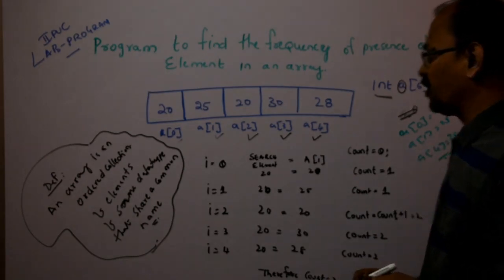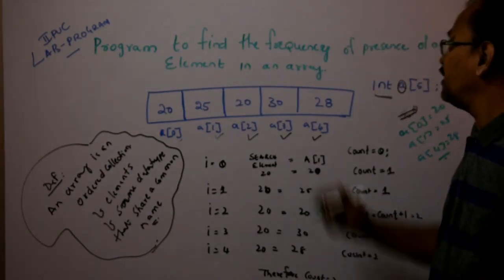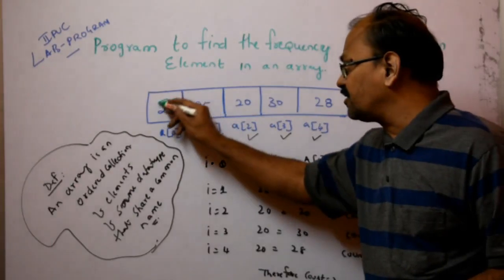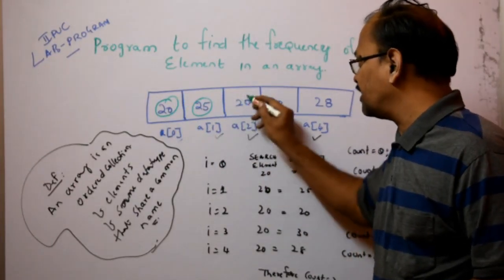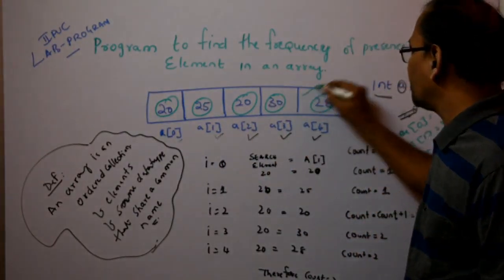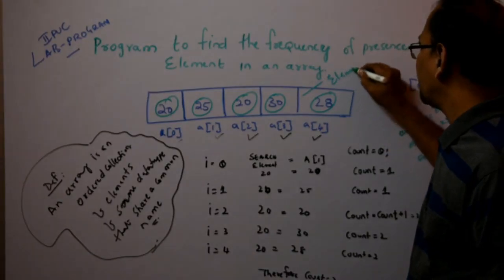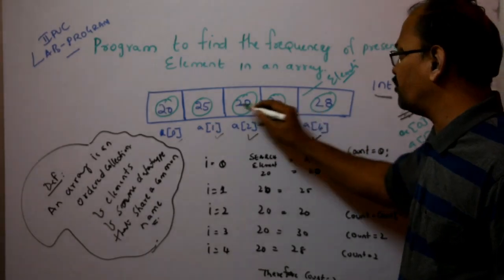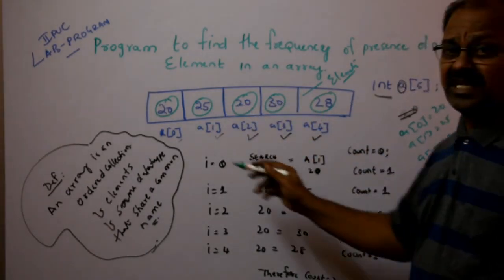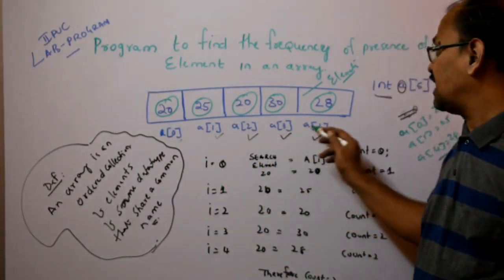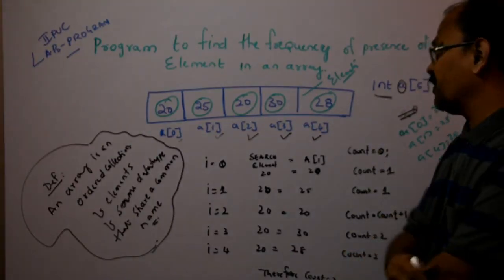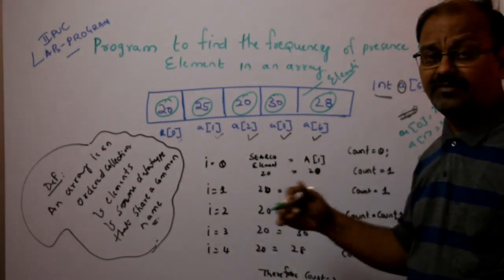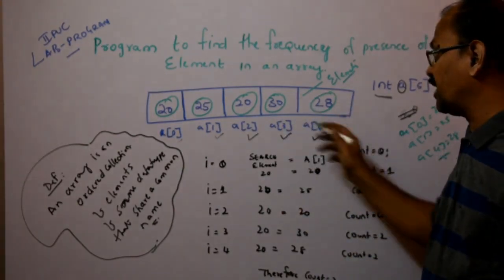Now we have a program to find the frequency of the presence of an element in an array. We can call them as the elements. There are 5 elements, with the starting location at A[0] and the last location at A[4]. Now we want to search an element — specifically, how many times a particular element is repeated in this array.